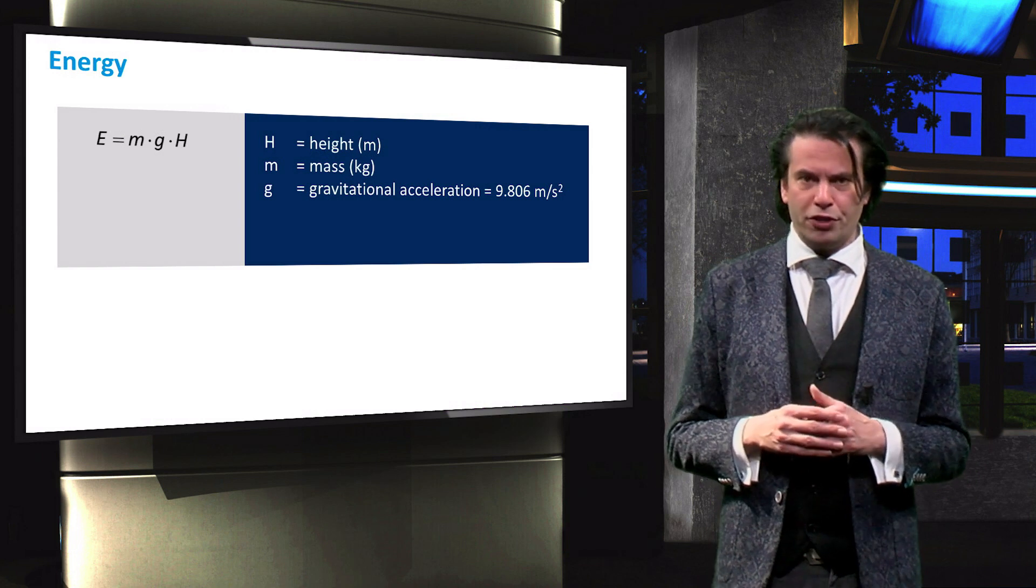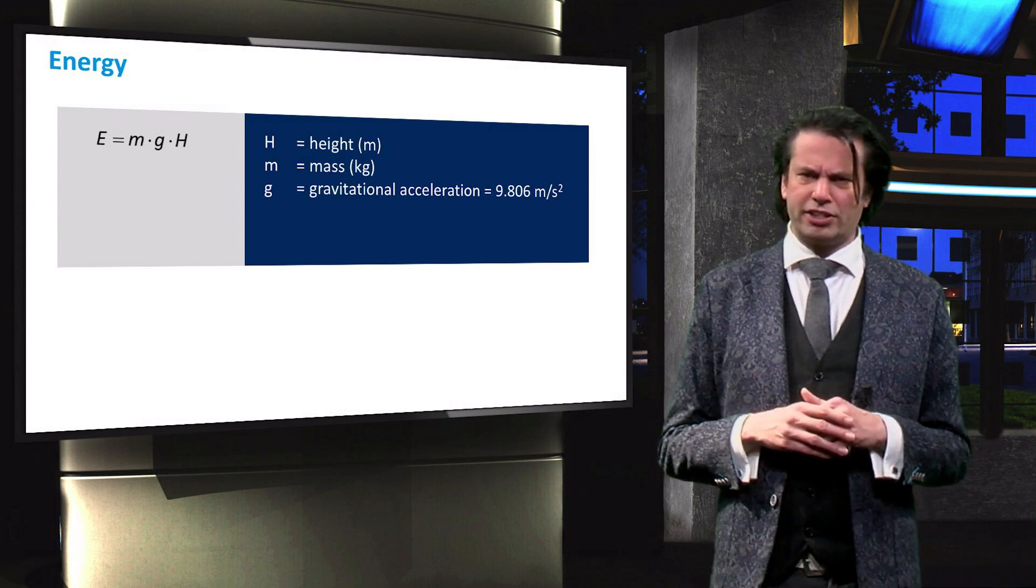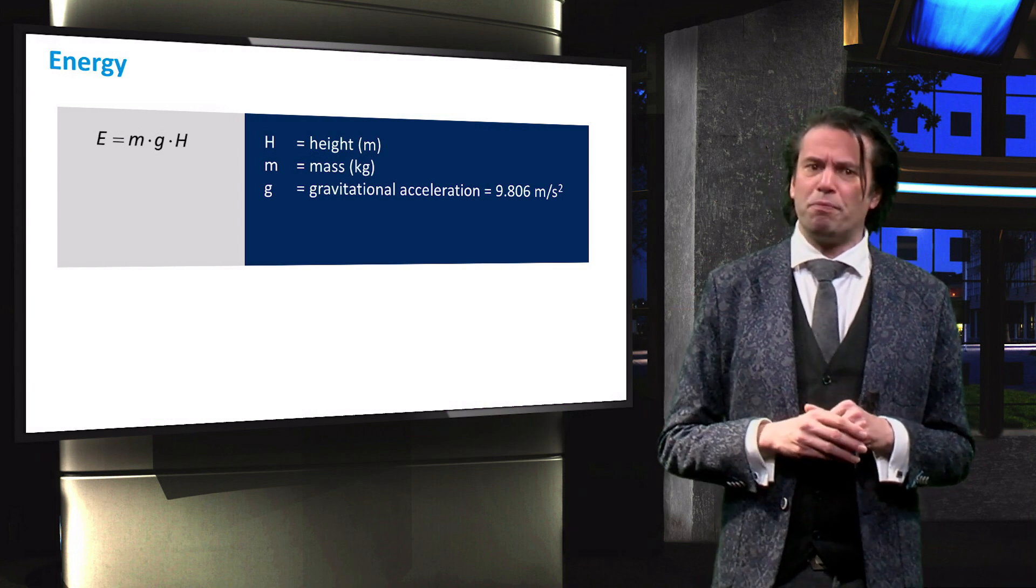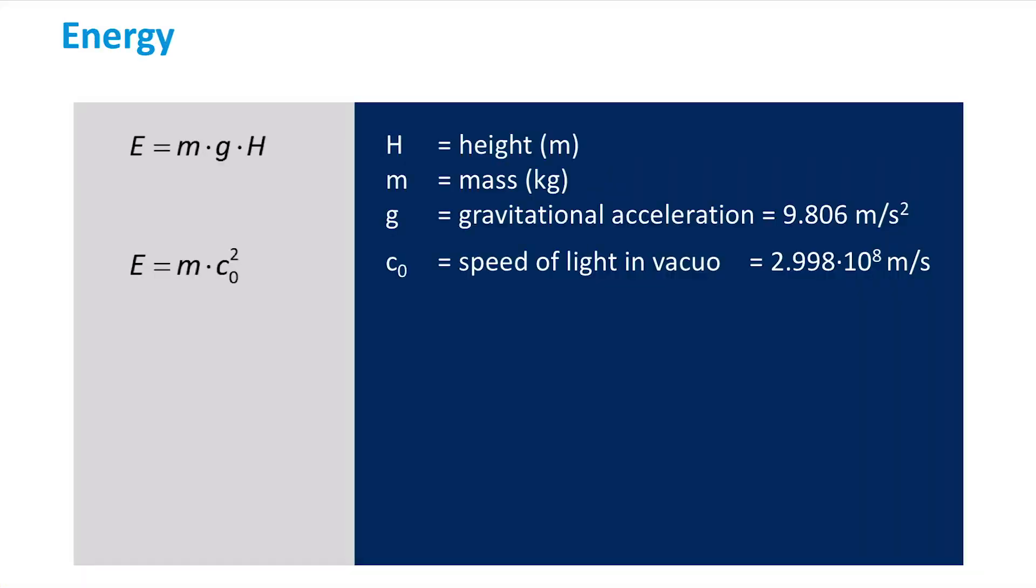We have related energy to the mass of an object and the height of that object, with respect to the surface of the earth, through the gravitational acceleration, which is derived from the gravitational constant.